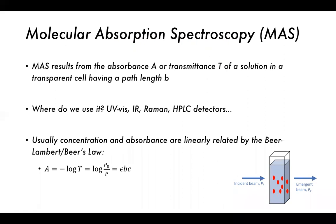Molecular absorption spectroscopy results from the absorbance A or transmittance T of a solution in a transparent cell having a path length of B. So we're putting in our spectrometer some sort of cuvette, filled with a solution containing a solvent and also our solute of interest, our analyte, and then we are measuring the absorbance or transmittance from that sample. The path length is the length or the width of the cell which is in the beam of light.